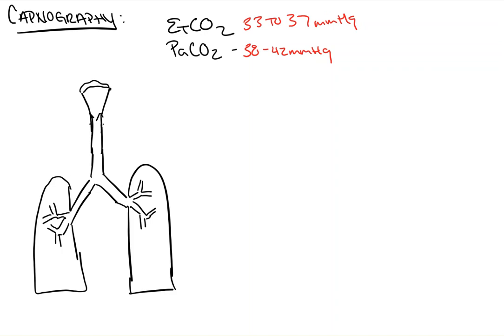So first, before we even look at the tracing, we need to get a general idea of how the technology works, and if you watch the video on the pulse oximeter, the concept is the exact same. There is a light emission source on one side, we call this emission, and on the other side, there is a light detection source.